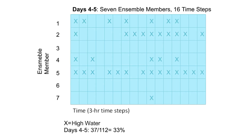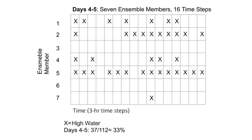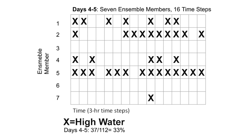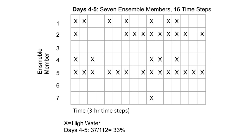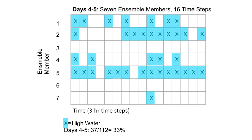For days four through five, there are 16 three-hour time steps over that two-day period. The X's indicate which National Water Model time steps meet the estimated high water criteria. There are a total of 112 forecast time steps. In this case, 37, or 33 percent, have met the estimated high water criteria. The probability of high water for days four through five is 33 percent.